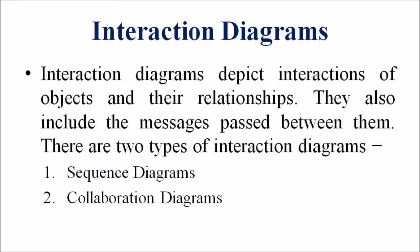Next we are discussing the Interaction Diagram. An Interaction Diagram depicts the interaction of objects and their relationships. They also include the messages passed between them. There are two types of Interaction Diagrams: Sequence Diagram and Collaboration Diagram. The Interaction Diagrams are used for modeling the control flow by time ordering using a Sequence Diagram as well as the control flow of organization using a Collaboration Diagram.